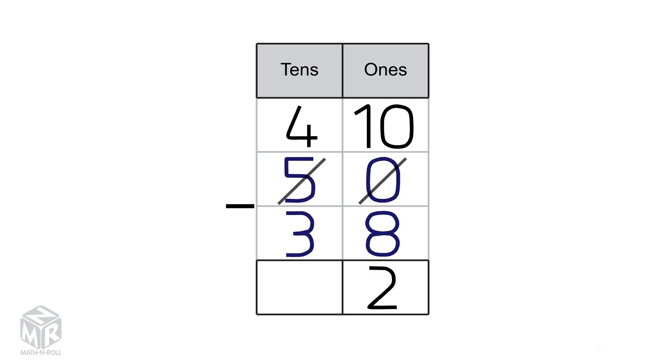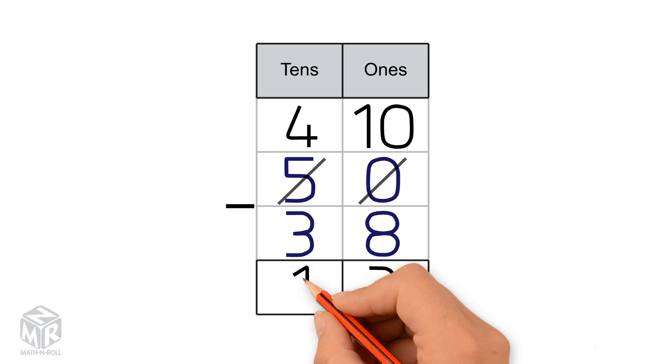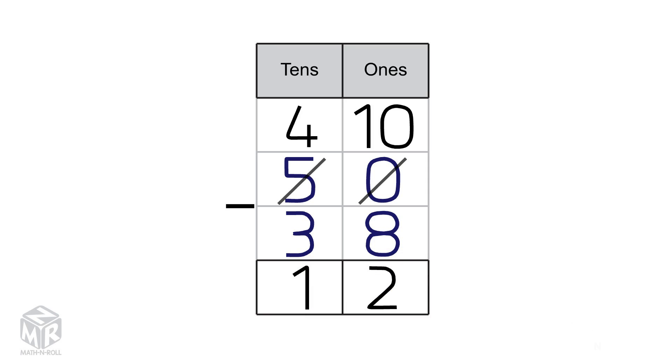Then we subtract the 10s: 4 minus 3 equals 1. So 50 minus 38 equals 12.